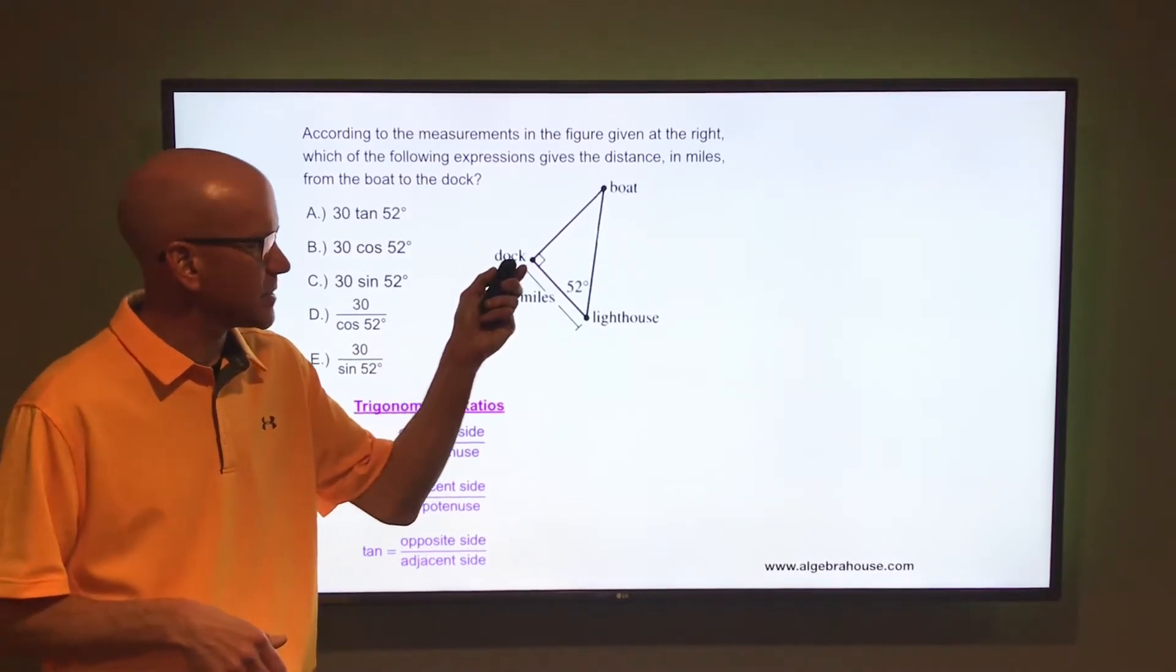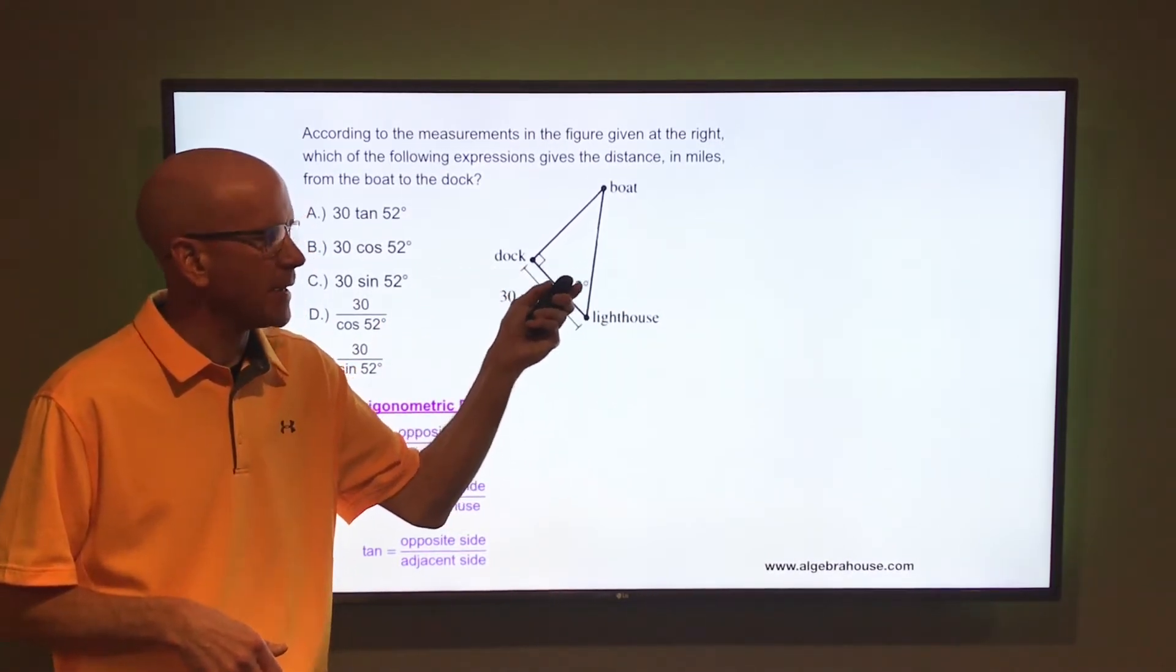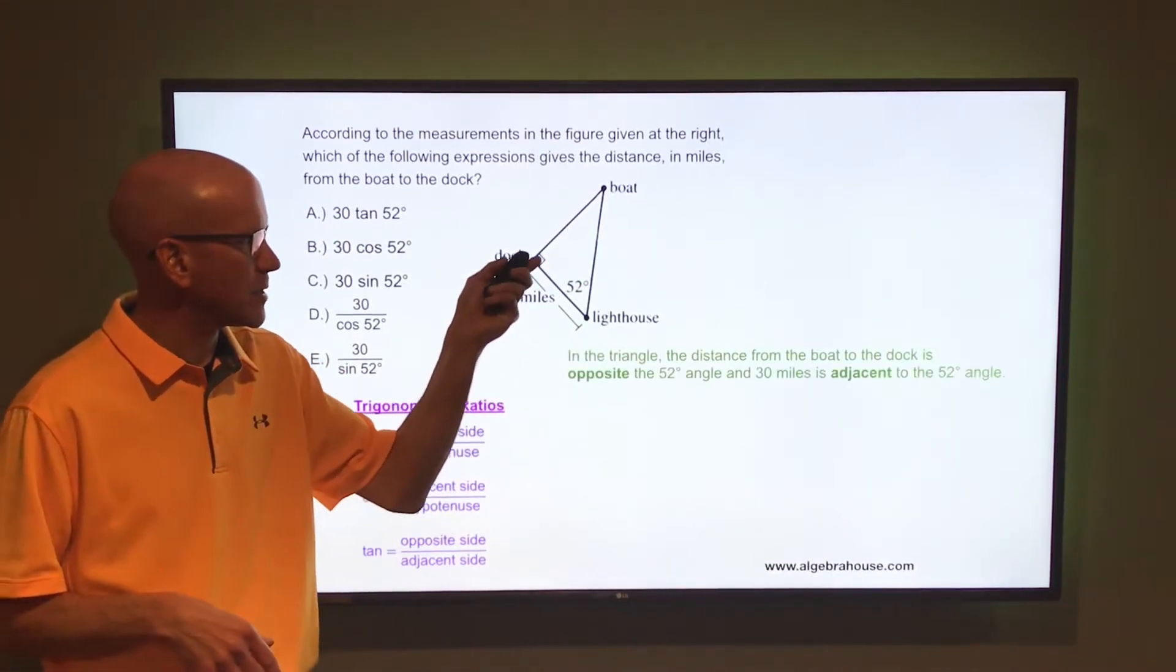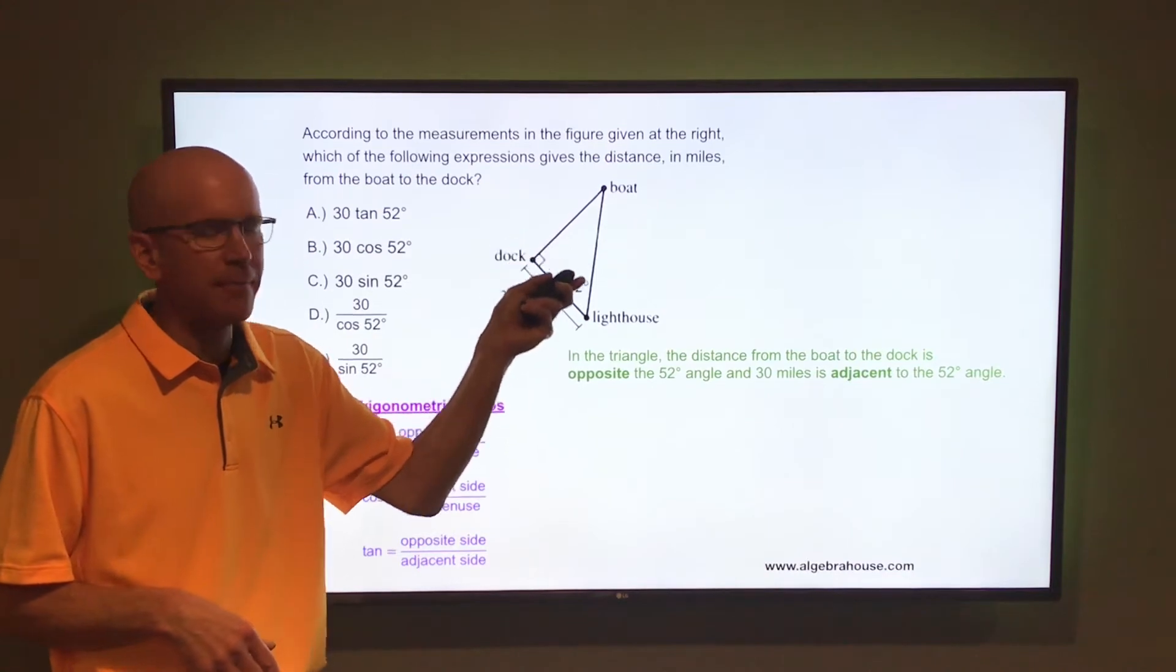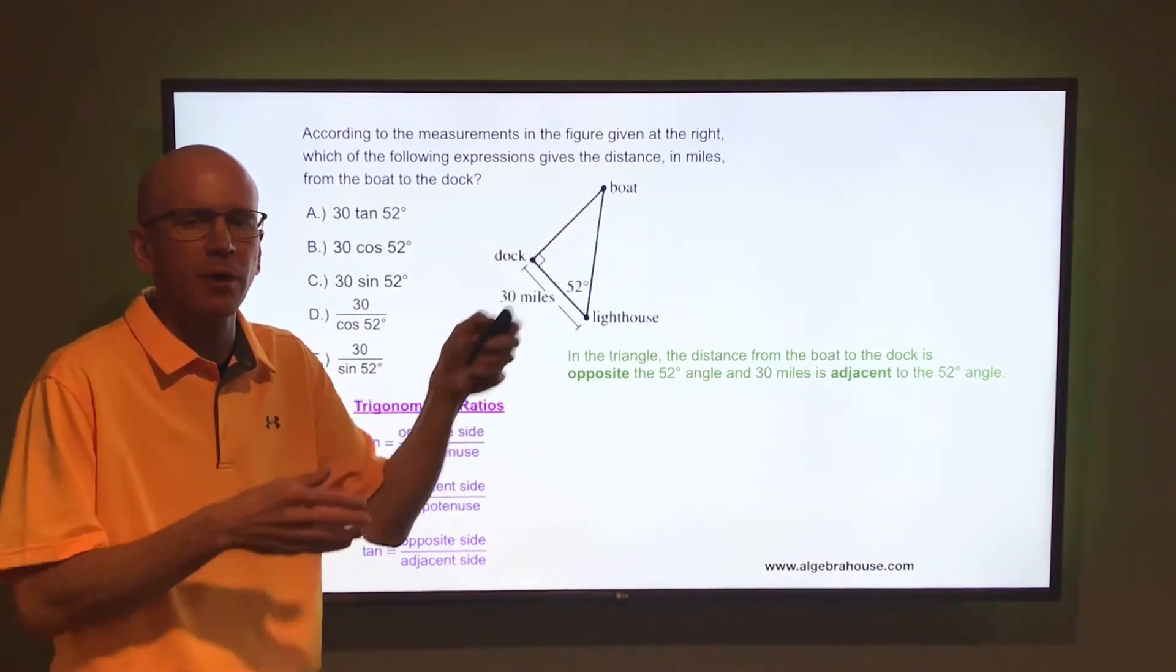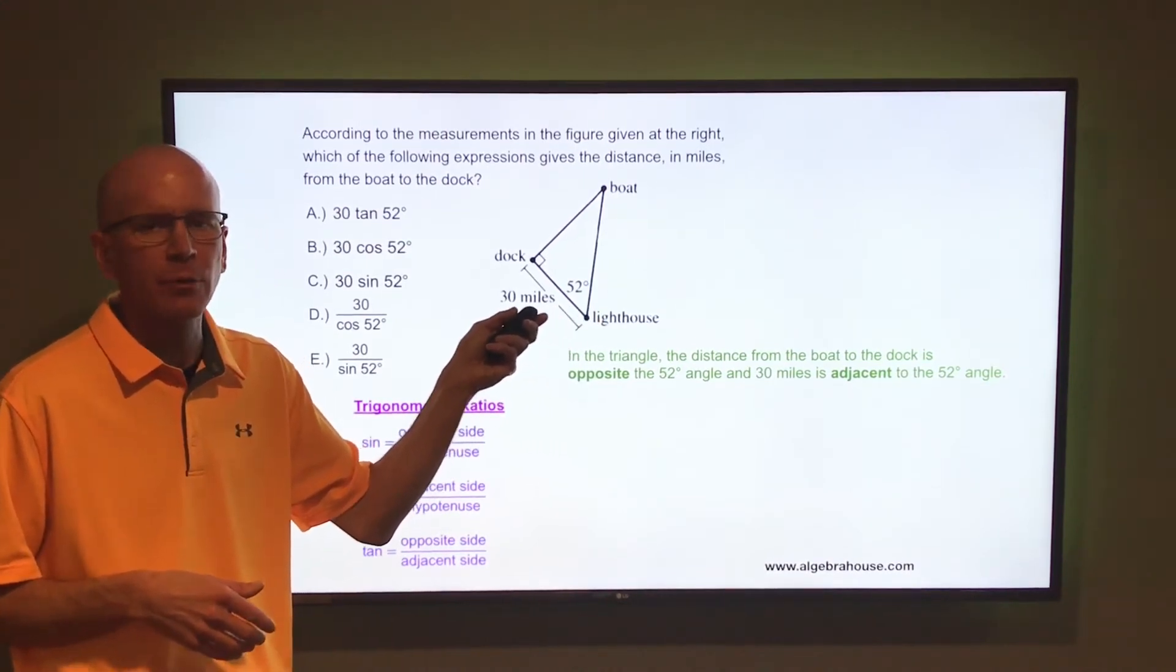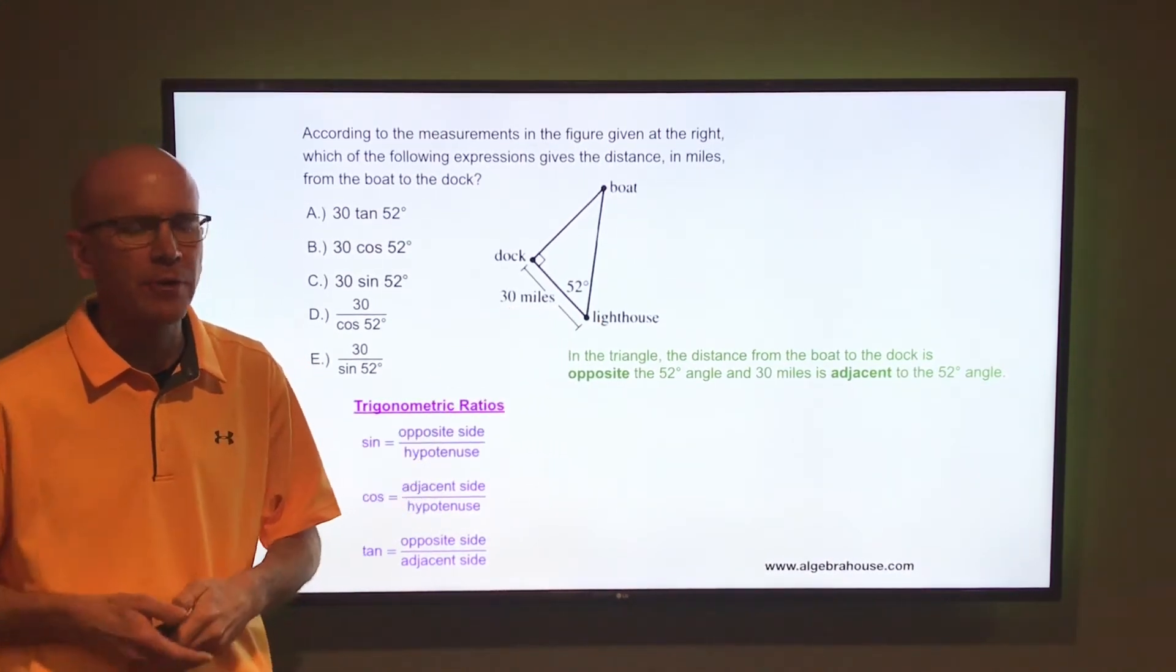The hypotenuse is the side across from the right angle or the longest side of a right triangle. In this triangle, the distance from the boat to the dock is opposite that 52 degree angle or across from the 52 degrees. The 30 miles is adjacent to that 52 degree angle or next to the 52 degrees.